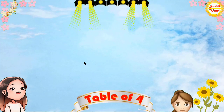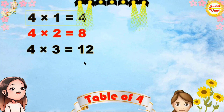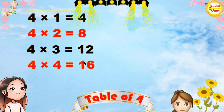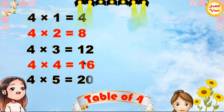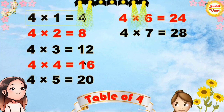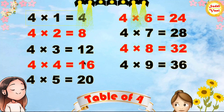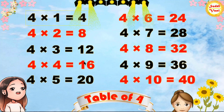Once again: 4×1=4, 4×2=8, 4×3=12, 4×4=16, 4×5=20, 4×6=24, 4×7=28, 4×8=32, 4×9=36, 4×10=40.